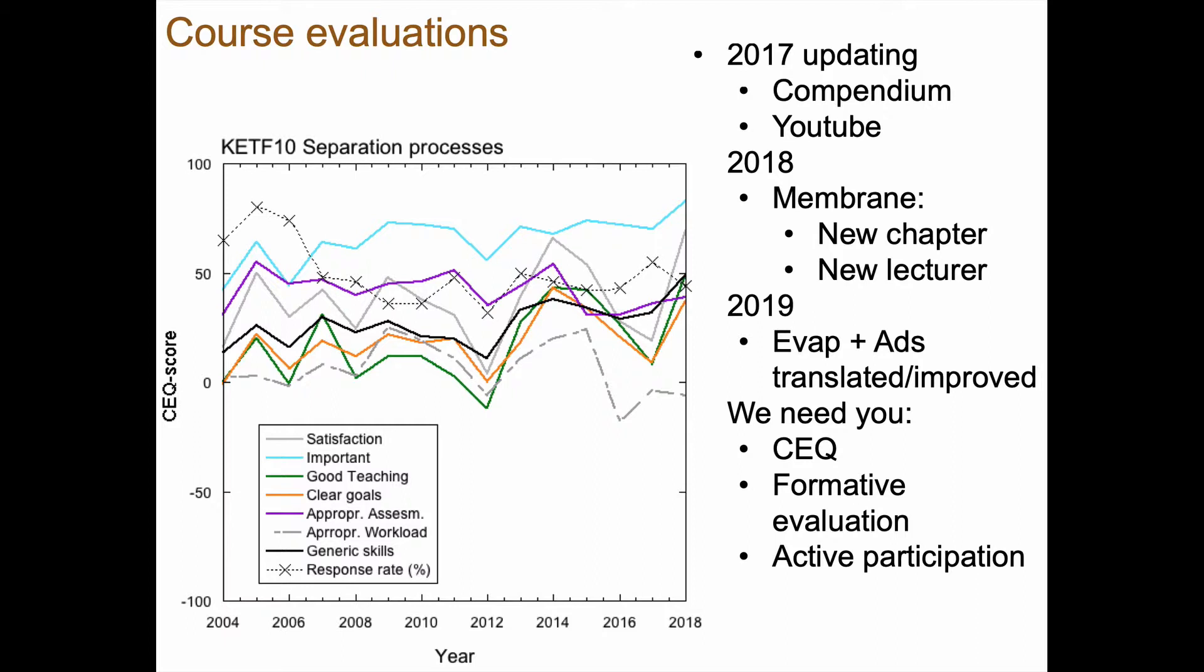So every year we try to improve something. So 2017, we updated the compendium and added quite a few YouTube videos. In 2018, I wrote a new chapter on membrane instead of the material we had before. And I also started giving those lectures because we had the old professor retiring. In 2019, I have translated most of the compendium. What's left to translate is actually the very first chapter. And yeah, and we need you. We need you to answer the course experience questionnaire at the end of the course to take active part in the formative evaluation that we have during the course and act your active participation in the course. So we can find out what works and what doesn't work that good.